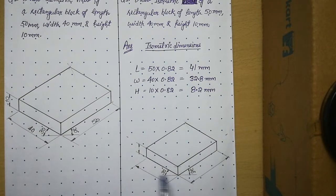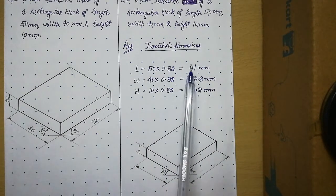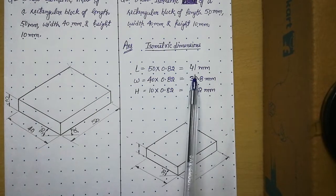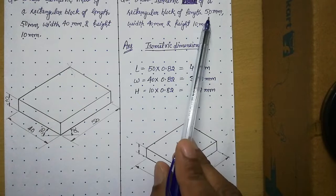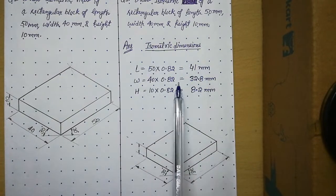Now when we will draw the diagram or the isometric projection, we need to use these isometric dimensions. So all these are 82% of the original given in the question. So this we have to understand.